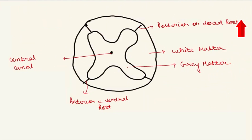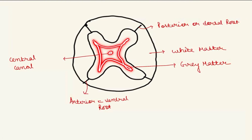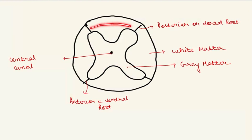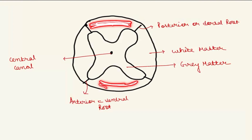So let us talk about the spinal cord tracts. This is a section of the spinal cord — the inside is grey matter, this is the central canal, this is the dorsal or posterior area, and this is the ventral or anterior area. Here we have the presence of white matter. On the basis of this section, we will discuss the tracts.